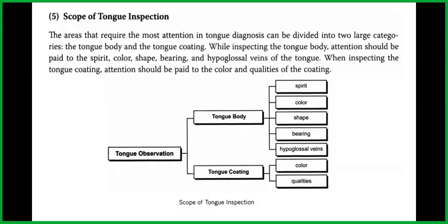Scope of tongue inspection: the areas requiring most attention in tongue diagnosis can be divided into two large categories — the tongue body and the tongue coating. While inspecting the tongue body, attention should be paid to the spirit, color, shape, bearing, and hypoglossal veins. When inspecting the tongue coating, attention should be paid to the color and qualities of the coating.